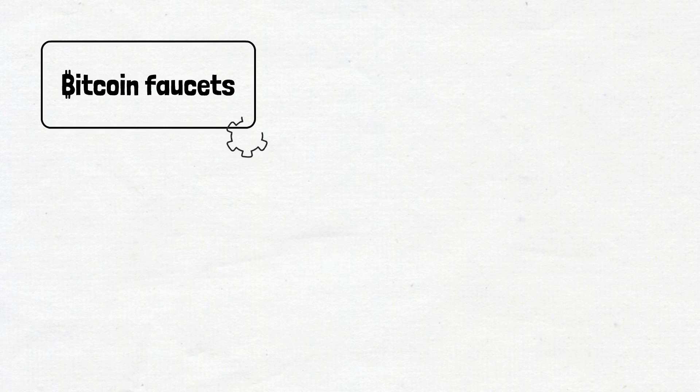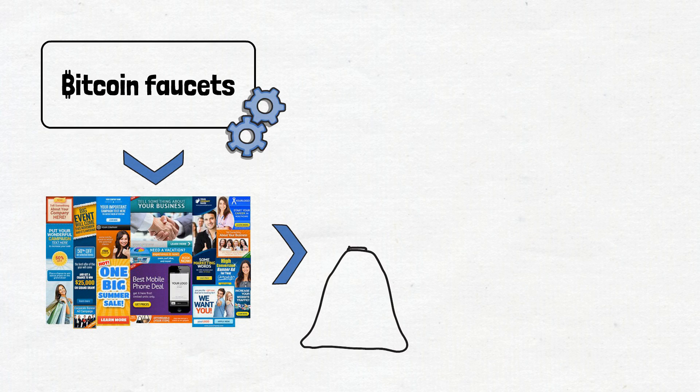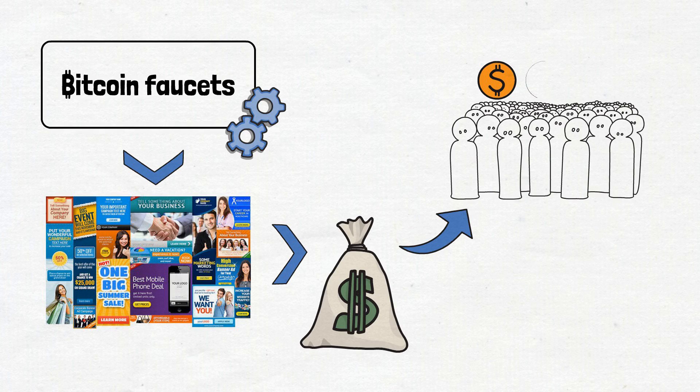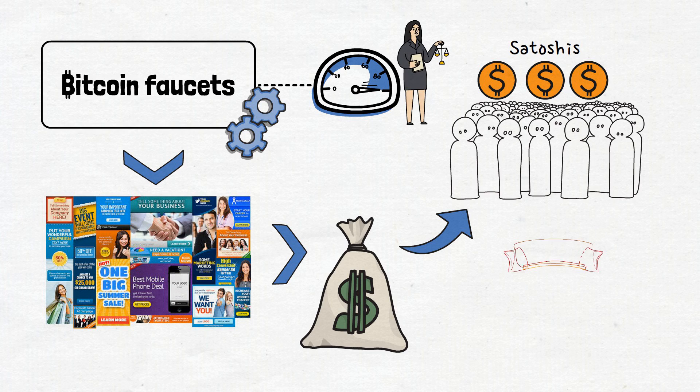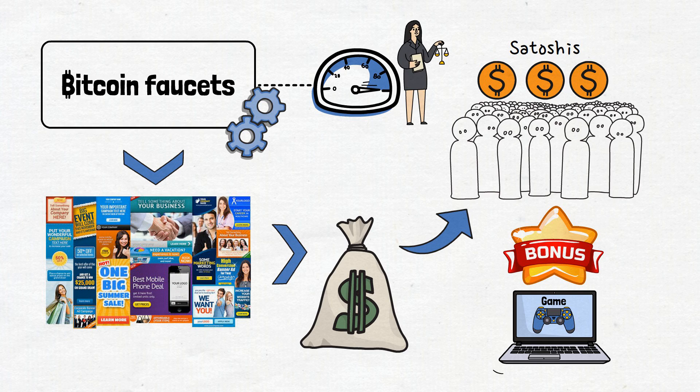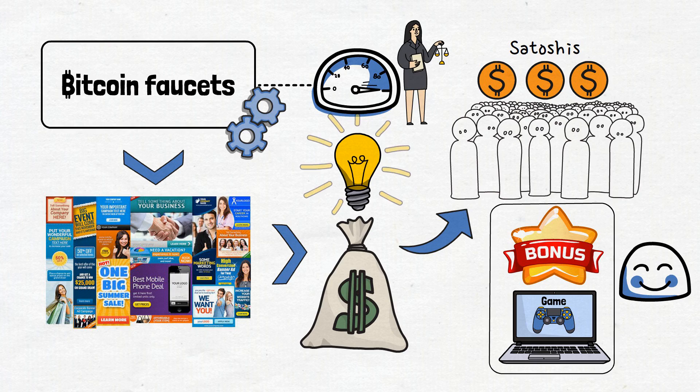So, to sum it up, Bitcoin faucets work by using ads to generate income, which they then share with you in the form of tiny bits of Bitcoin called satoshis. The faucets use some limiting rules to keep things fair and might throw in some bonuses and games to make the experience more enjoyable. Interesting, isn't it?